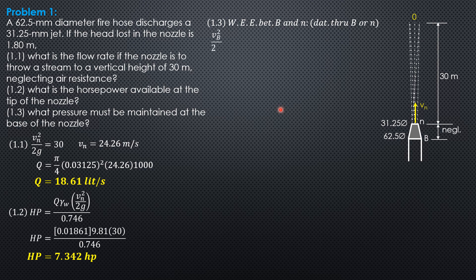Velocity head at B plus pressure head at B plus elevation head at B equals velocity head at the nozzle tip plus pressure head at the nozzle tip plus elevation head at the nozzle tip plus head loss from B to N.